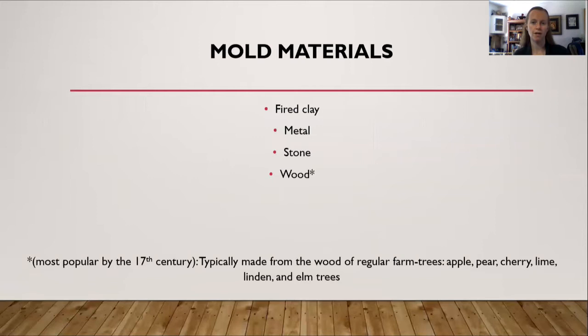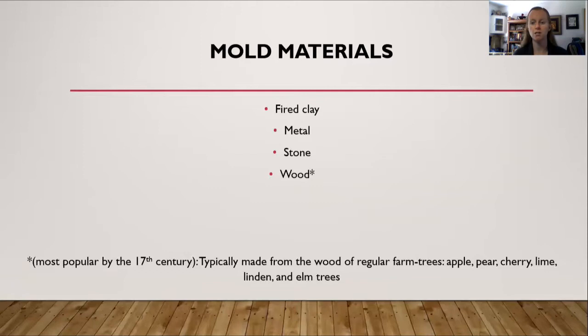Most historical mold materials you'll find were either fired clay, metal, or wood — I've seen references to stone, but looking at museums I have not found any surviving examples of stone molds. Wood was the most popular by the 17th century, especially from the 16th to 17th century when woodcarvers really began to blossom. Molds were typically made from farm tree woods: apple, pear, cherry, lime, linden, and elm. The main thing is you wanted a wood that is not very porous, making the surface easy to clean and reuse.